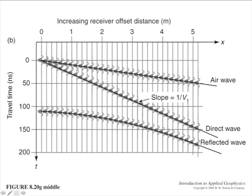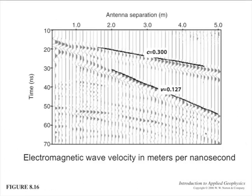And then you'll get reflections. So here's a reflection that has a minimum two-way travel time of, say, 120 nanoseconds. And it's going to be asymptotic to the direct wave, not the air wave. If it's asymptotic to the air wave, that means it's propagating above ground. And that's not what we're interested in.